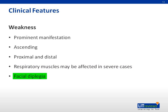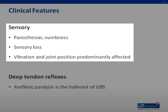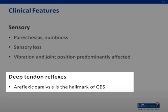Paresthesia and slight decreased sensation in toes and fingers is one of the earliest symptoms. Sensory loss is variable during the first few days and barely detectable clinically. Vibration and joint position sense is usually impaired in toes and fingers by the end of the first week. Deep tendon reflexes attenuate and disappear within the first few days of onset.